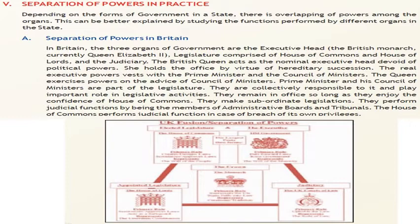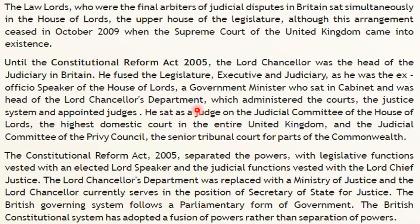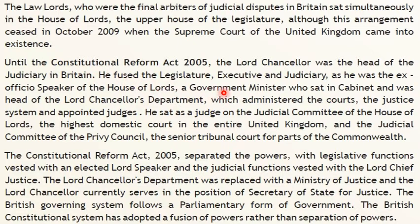The House of Commons performs judicial functions in cases of breach of its own privileges. The law lords, who were the final arbiters of judicial disputes in Britain, sat simultaneously in the House of Lords — the upper house of the legislature — although this arrangement ceased in October 2009 when the Supreme Court of the United Kingdom came into existence. Under the Constitutional Reform Act 2005, the Lord Chancellor was the head of the judiciary in Britain, and he fused the legislature, executive, and judiciary.